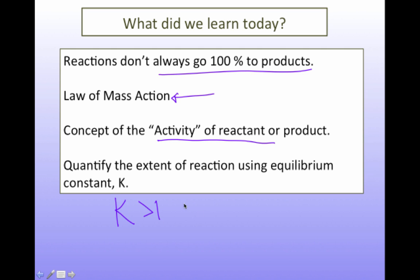So k much greater than one or k greater than one, this was something that favored the products. And k less than one, this was something that favors the reactants. So with that, we will pick up with these things on Tuesday and talk a little bit about free energy.